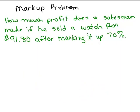Here's a markup problem. How much profit does a salesman make if he sold a watch for $91.80 after marking it up 70%? First of all, there should be a question mark there. There we go.